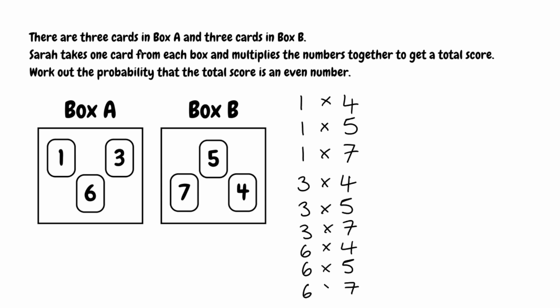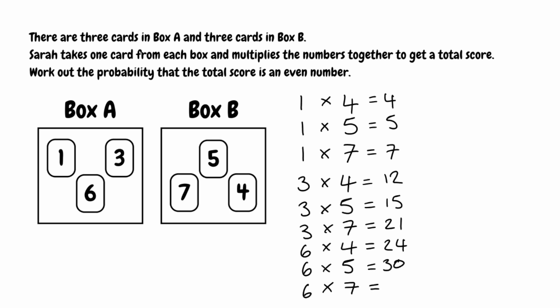Multiplying each pair to get the total scores: 1×4=4, 1×5=5, 1×7=7, 3×4=12, 3×5=15, 3×7=21, 6×4=24, 6×5=30, and 6×7=42.